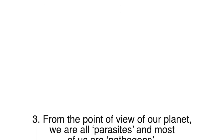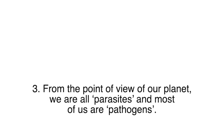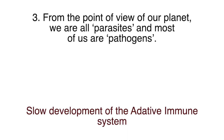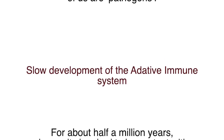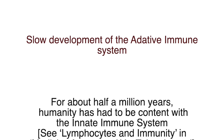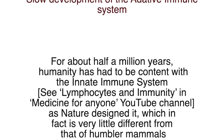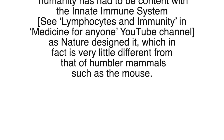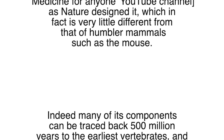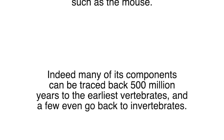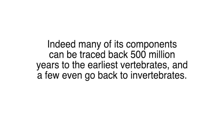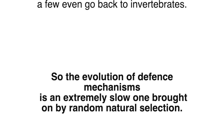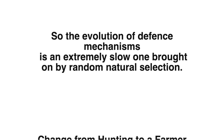From the point of view of our planet, we are all parasites. For about half a million years, humanity has had to be content with the innate immune system as nature designed it, which is very little different from that of humbler mammals such as the mouse. Indeed, many of its components can be traced back 500 million years to the earliest vertebrates, and a few go back even to invertebrates. The evolution of defence mechanisms is an extremely slow one, brought on by random natural selection.